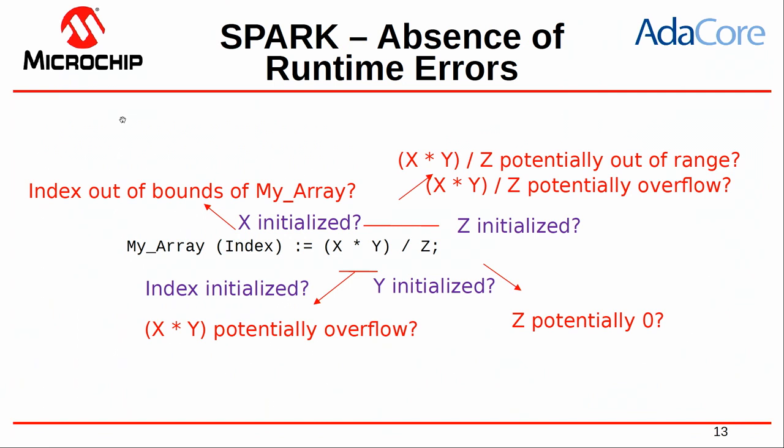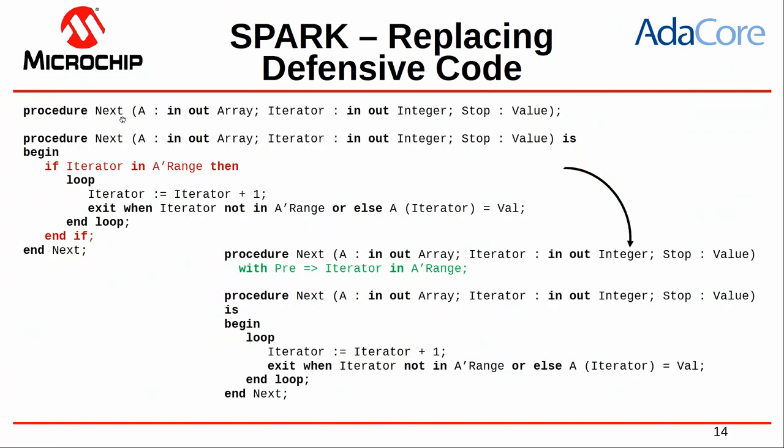With SPARK you can also do programming by contract. For instance, here we have an access to an array, and in defensive code you would normally check whether the index is within the range of the array. With SPARK, you export that constraint to the API user with a precondition, and the formal verification framework proves that the property is always satisfied — meaning no out-of-bounds access ever occurs. This allows you to remove the runtime check and actually achieve better performance.